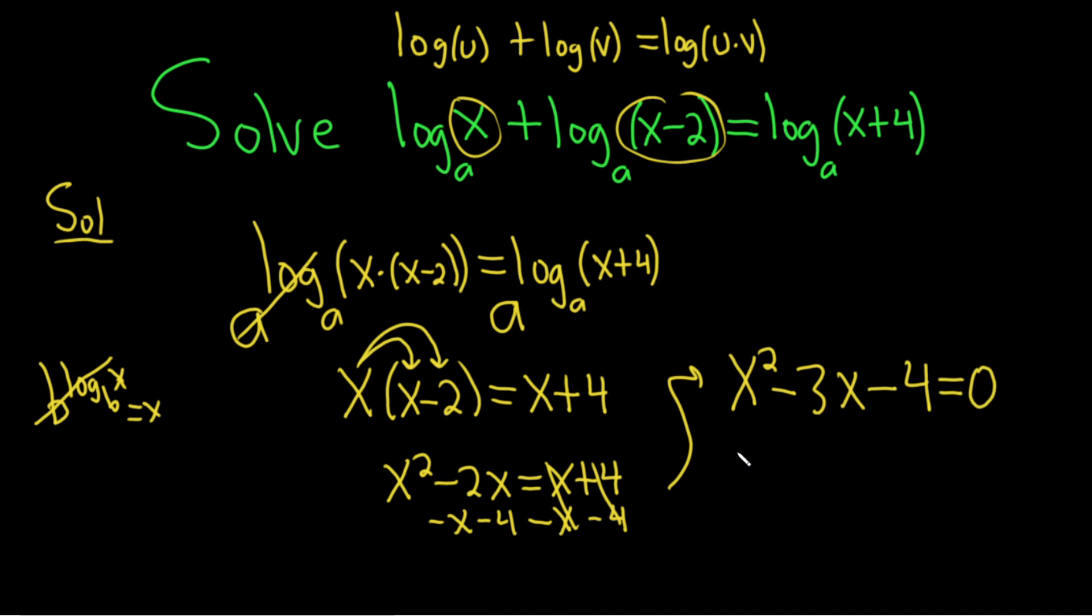Let's attempt to factor this. Usually when we have problems like this they factor—it's very rare that you have a problem like this that doesn't factor. So we have an x here and an x here. We need to multiply to four and add to negative three. Four and one multiply to four, and if we make the four negative and the one positive, it'll work out.